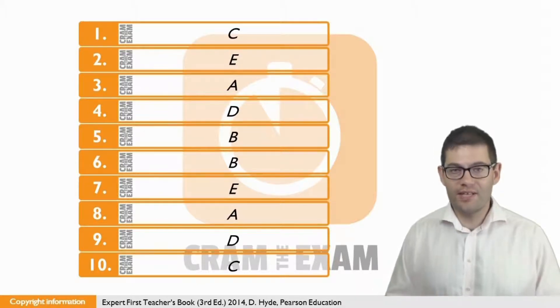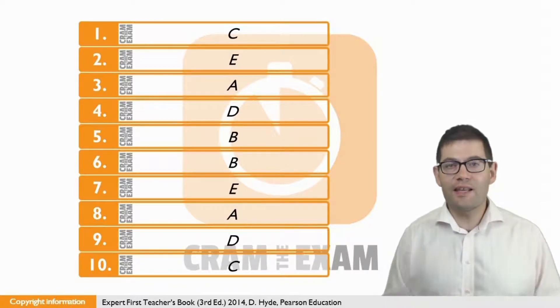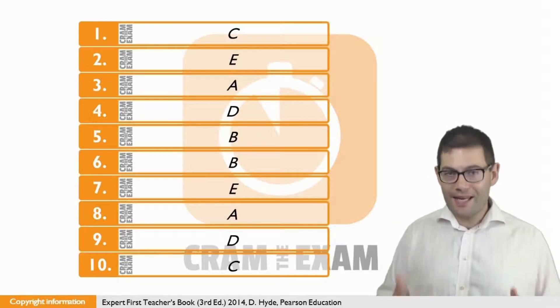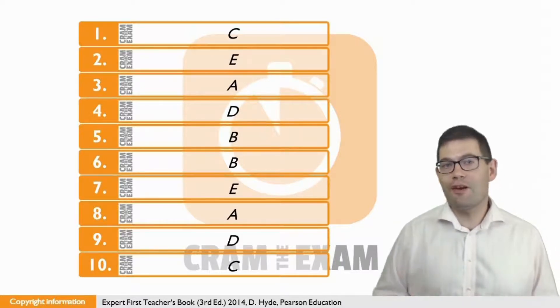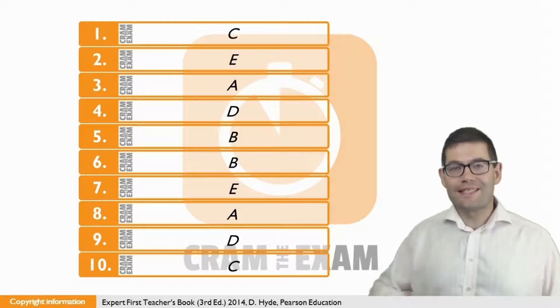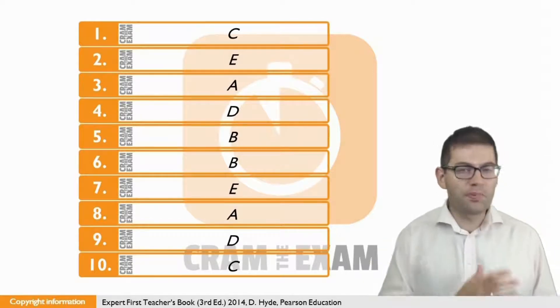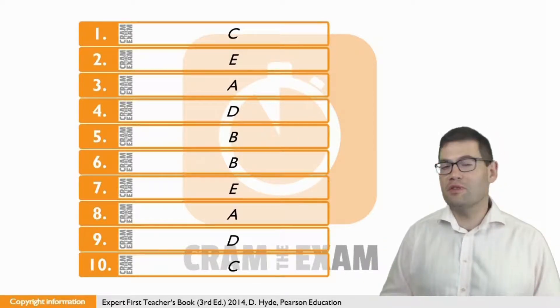For question four, the answer is D. Graham resents feeling pressured into giving money. The pressure to give money is reflected at the beginning of D, when he says he gets annoyed when charity collectors stand outside shops and swoop down on you, trying to make you feel guilty.